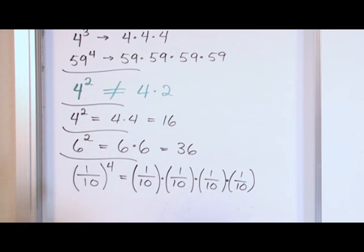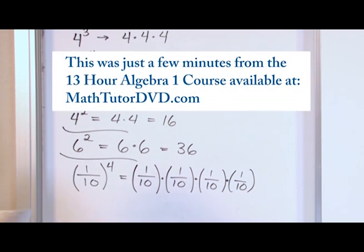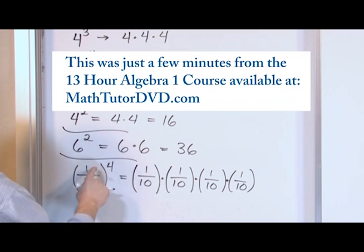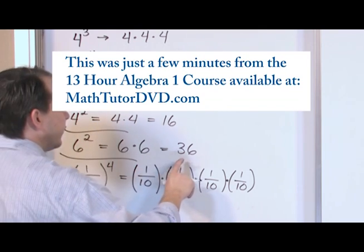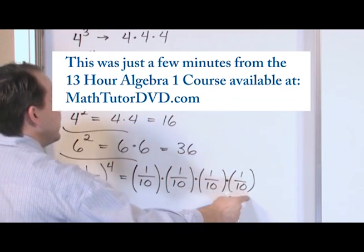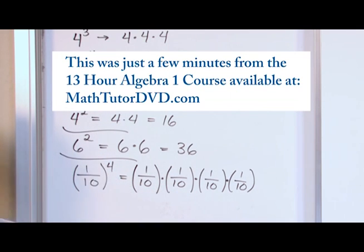So this is exactly what you might expect, just like we were doing six up here. Six times six. Well, this is what's inside, so it's one-tenth times one-tenth times one-tenth times one-tenth. We're doing it four times because we have a power of four there.